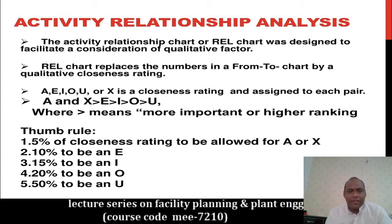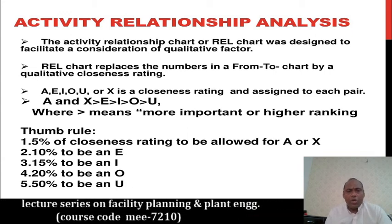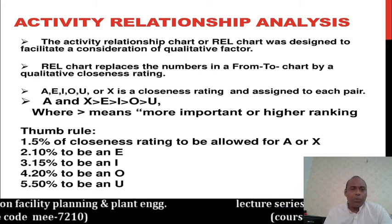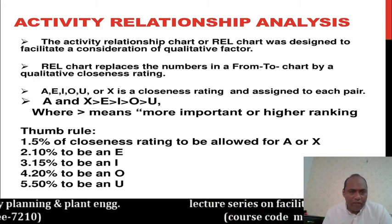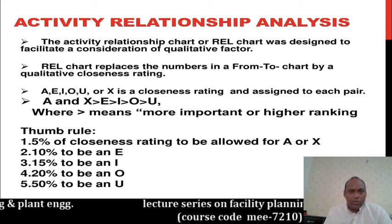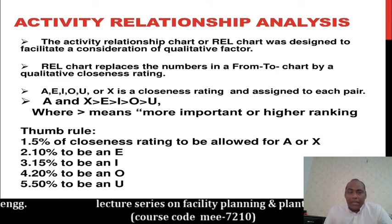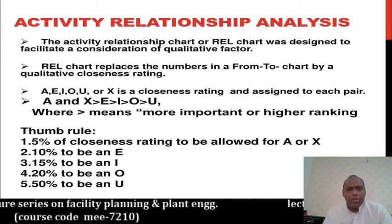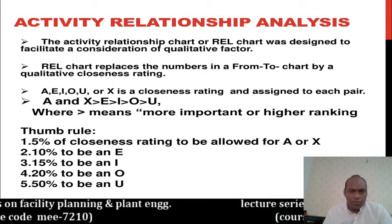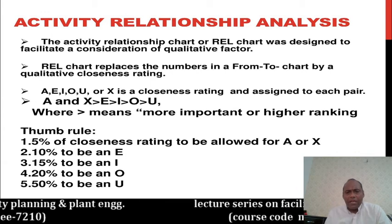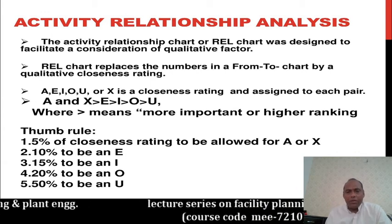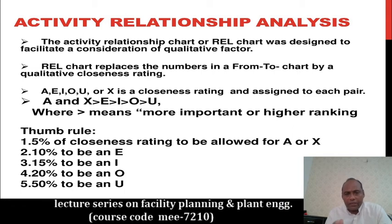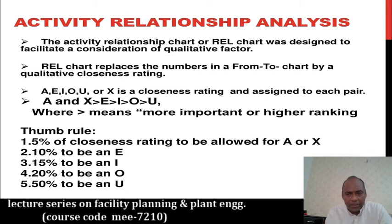As for the activity relationship thumb rules: the closeness rating for A is about 5%, X is 0.5%, 10% is given to E, 15% to I, 20% to O, and 50% to U. U means the activity is undefined — those relationships will not significantly affect the activity.